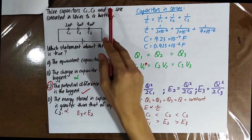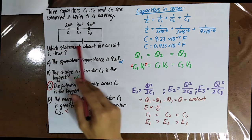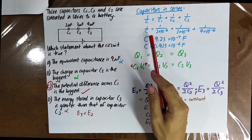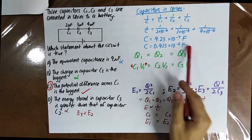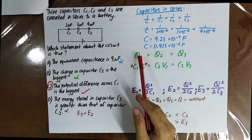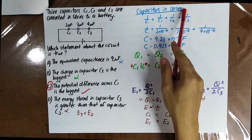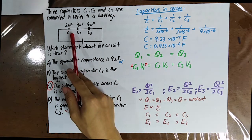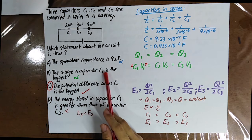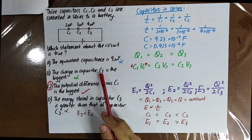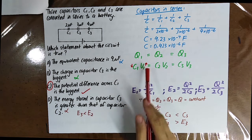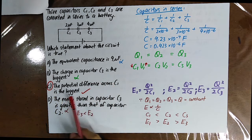Three capacitors C1, C2, and C3 are connected in a series circuit. Which statement about the circuit is true? First, find the equivalent capacitance using the series formula to get the correct value. When capacitors are connected in series, the charge on C1 equals the charge on C2, which equals the charge on C3 — so the charge in all capacitors is the same. Since C1 is the smallest, V1 should be the largest, meaning the potential difference across C1 is the biggest.